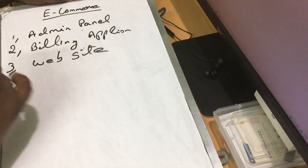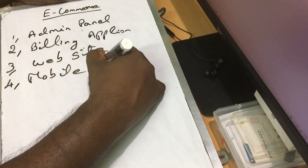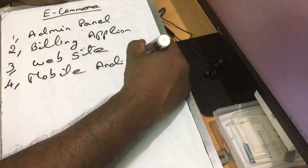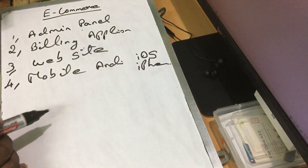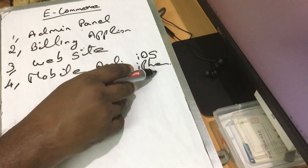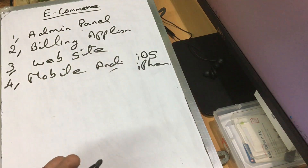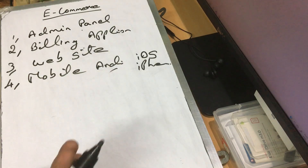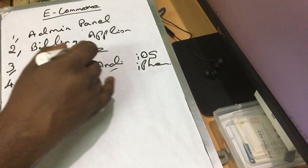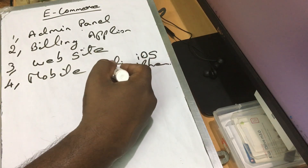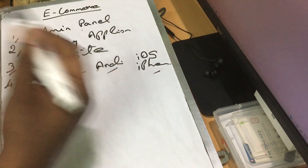Now you can use the e-commerce mobile application. There are two options — you can use an Android phone or iOS, meaning iPhone. So we can support both Android and iPhone applications. You can develop your application for both Android and iOS.